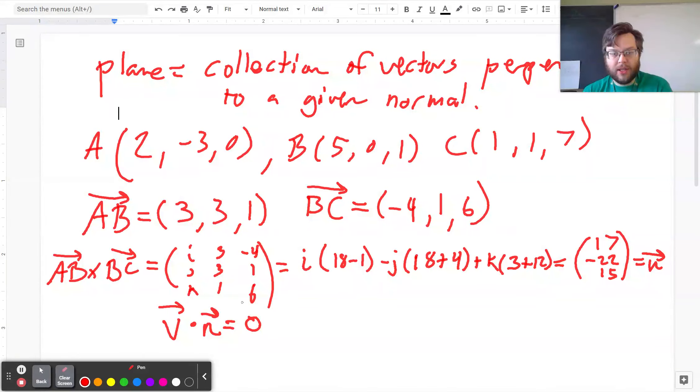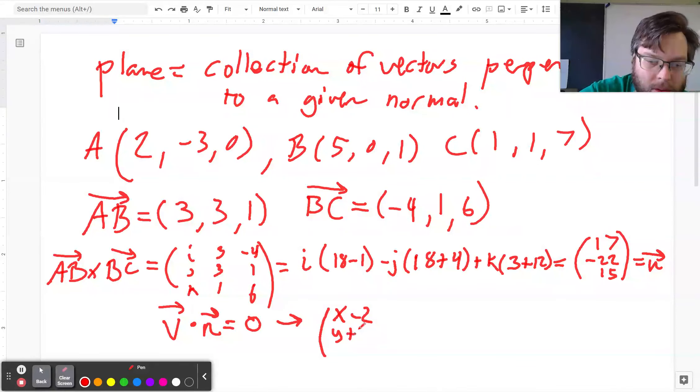So what I can do then is use a point to write all the vectors in the plane. So what I can do is say all the vectors in the plane are going to be, I've got a point of 2, I can use any one of my points, I'll just use A. So (x - 2, y + 3, z - 0) dotted with (17, -22, 15) should equal 0.